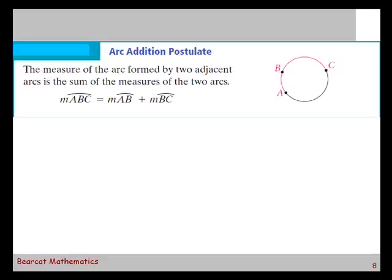There's the arc addition postulate that sounds a lot like the segment addition postulate. This is the measure of the arc formed by two adjacent arcs. That's why you have to know what adjacent arcs are.